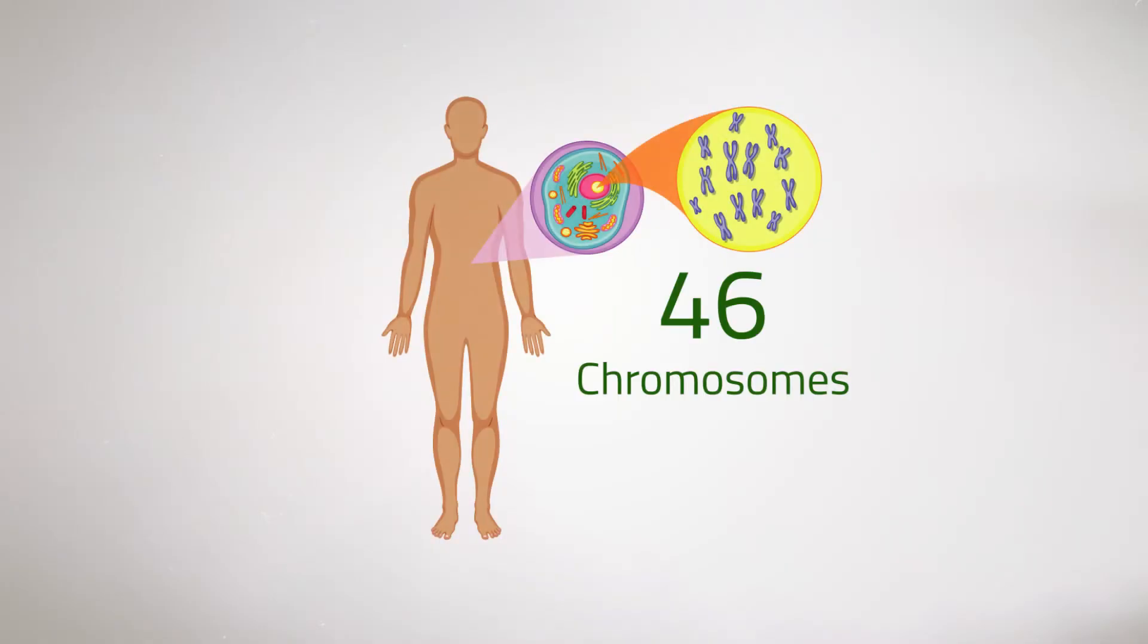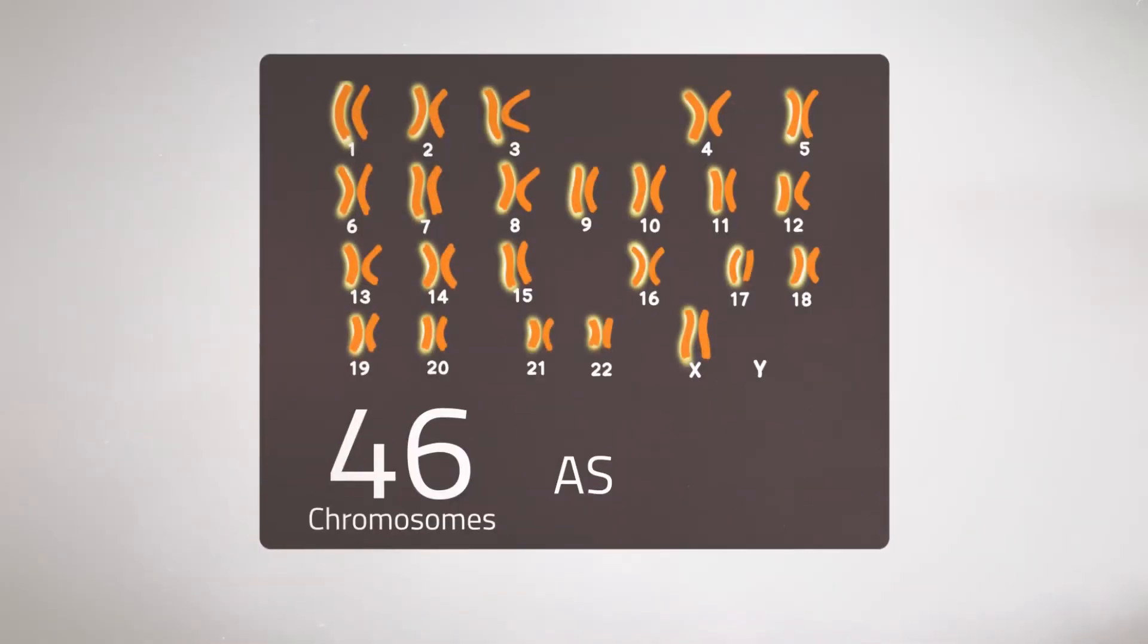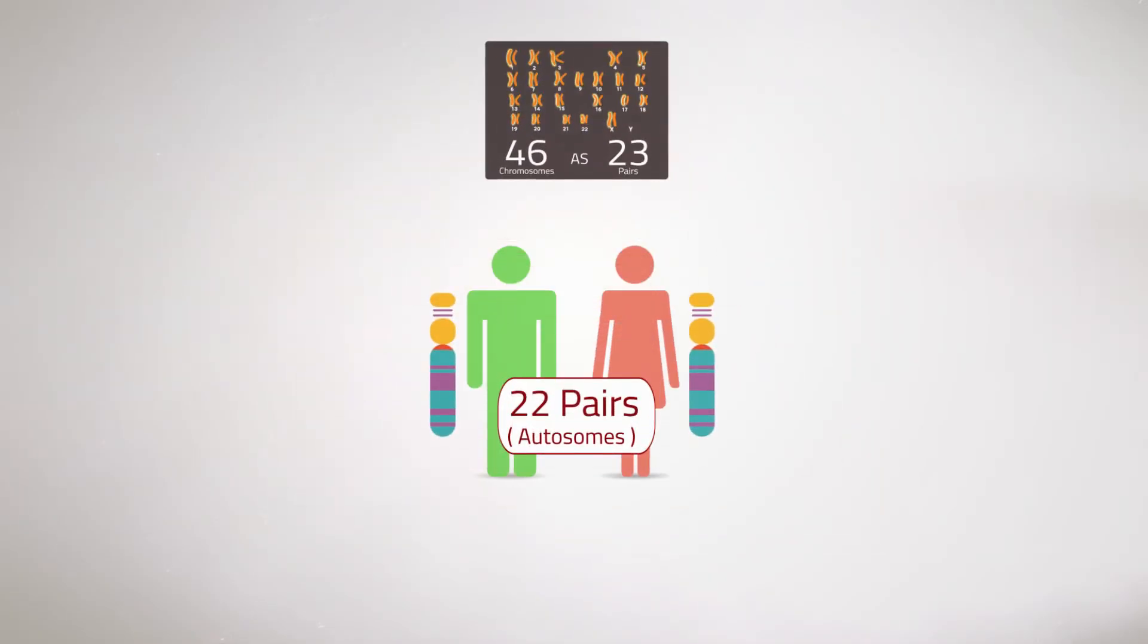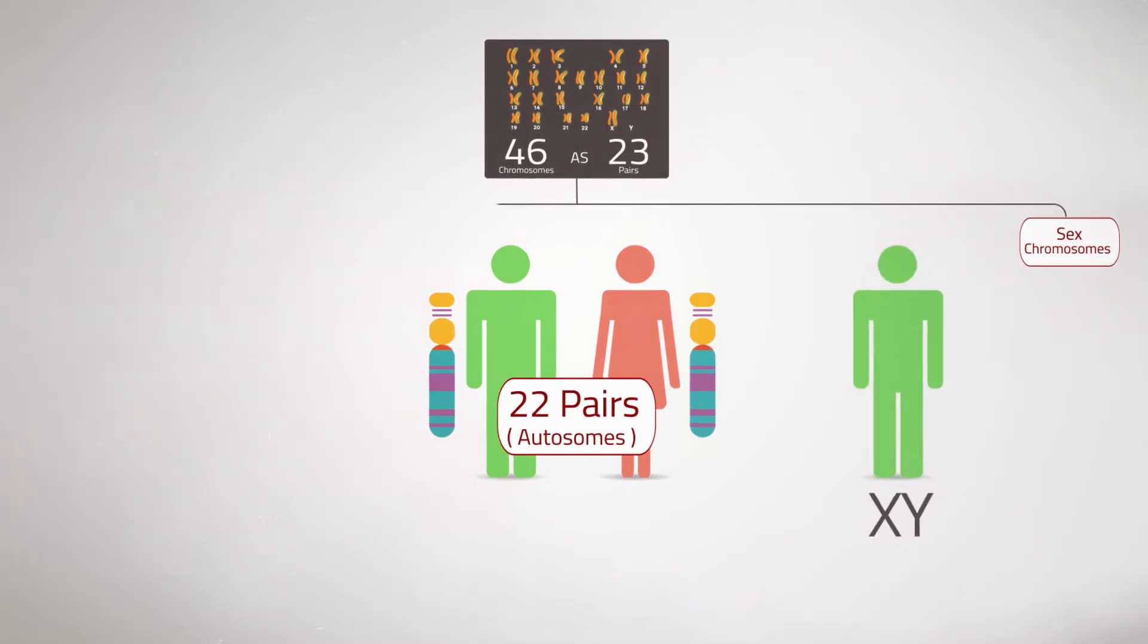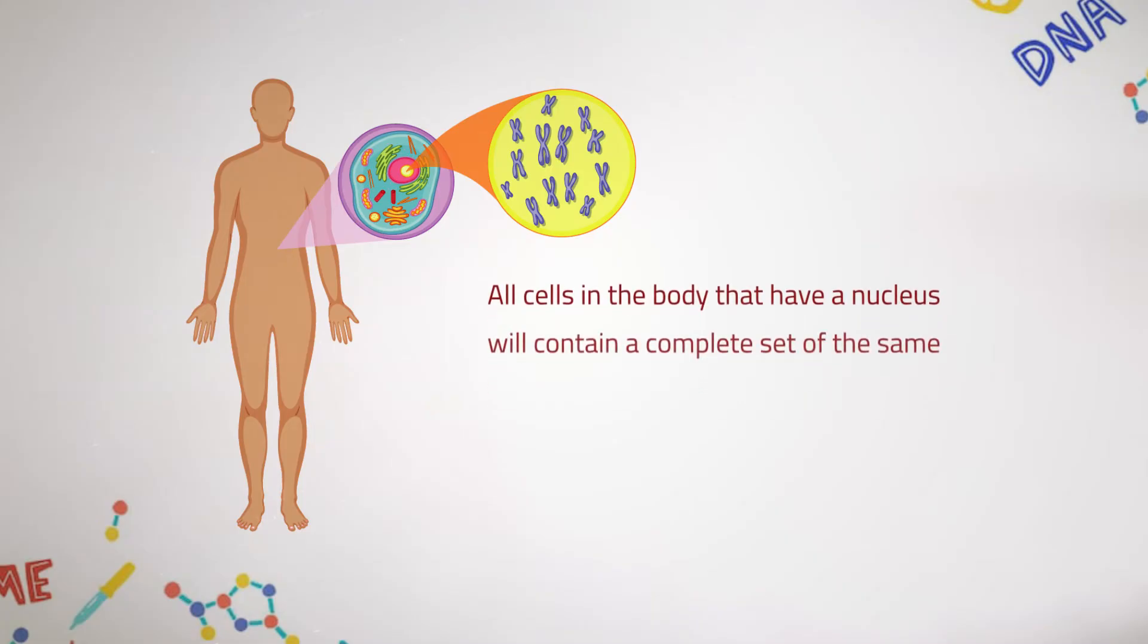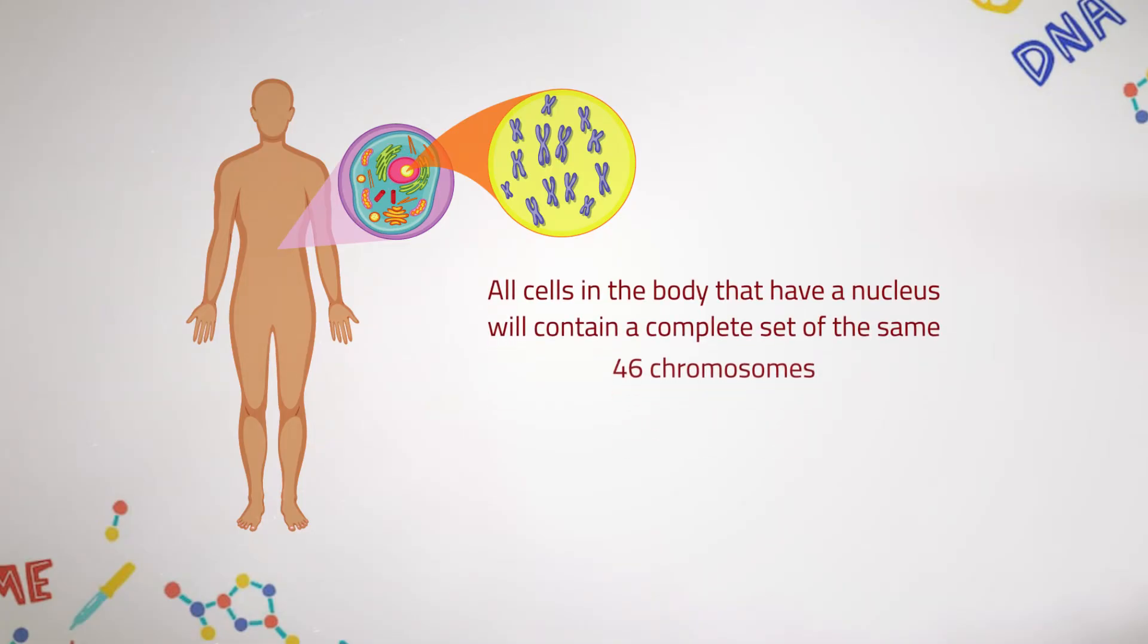Humans have 46 chromosomes present as 23 pairs. Twenty-two pairs are found in both sexes (autosomes), and one pair of sex chromosomes is present as either XY in males or XX in females. Normally, all cells in the body that have a nucleus contain a complete set of the same 46 chromosomes, except for the reproductive cells (eggs and sperm), which contain a half set of 23.